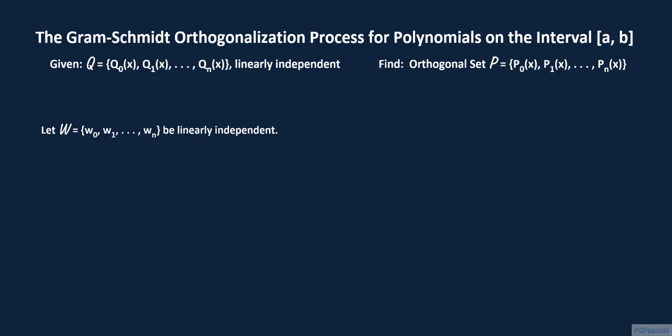Let W be a general set of linearly independent vectors W sub 0 to W sub n. The set W being linearly independent implies that none of the vectors in W is the zero vector. As an exercise, one can show inductively that the zero vector will not be part of the orthogonal set obtained via the Gram-Schmidt orthogonalization process.